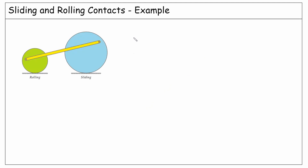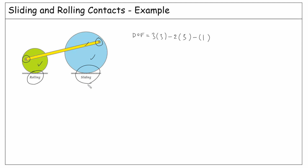In the next system, the degrees of freedom is 3 times 3 bodies, minus 2 times J1, which is 3, since we have 2 revolute joints and 1 rolling contact. Minus J2, which is 1 because of this sliding contact here. And the degrees of freedom is 2.